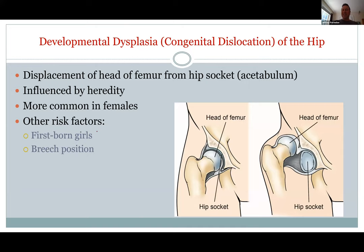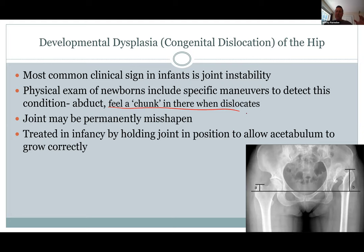Congenital hip dislocation — if it's not treated, you will have a hip deformity. So when they notice this, they'll move the leg and be able to feel that it's not quite right — it dislocates. Firstborn kids more often, women more often, and being in the breech position may have forced the leg in that direction. They'll abduct and adduct the leg and feel this chunk in there moving — that's the dislocation. You've got this hip dysplasia, and you need to get it in the right position, keep it there, and then the bone will grow correctly.